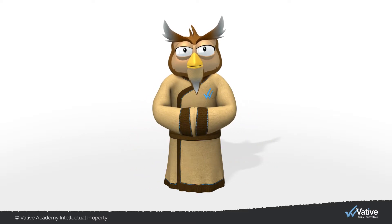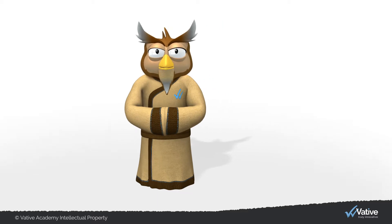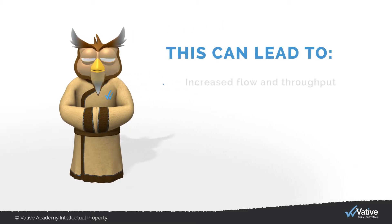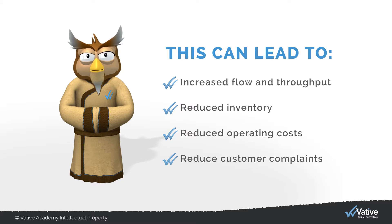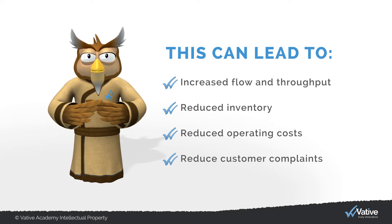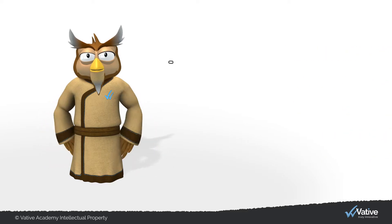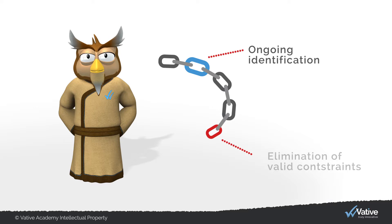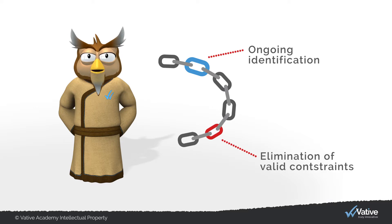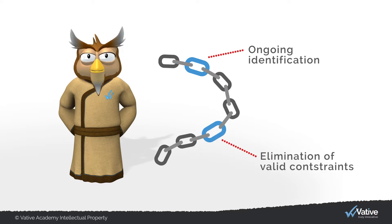Depending on the type of constraint resolved, this can lead to increased flow and throughput, reduced inventory and reduced operating costs, and reduced customer complaints. The theory of constraint makes continuous improvement purposeful through focused effort and the ongoing identification and elimination of valid constraints.